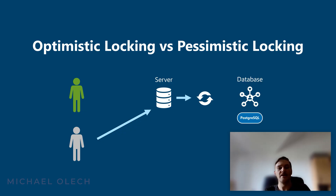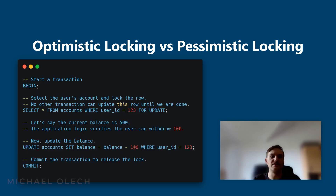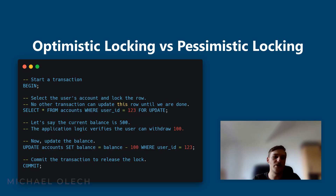Without further ado, let's talk about pessimistic locking. Pessimistic locking operates under the assumption that conflicts between transactions are very likely to occur. Therefore, it locks database records at the moment they are read, preventing any other transactions from modifying or sometimes even reading them until the first transaction is finished, either committed or rolled back. This approach is like saying: I'm probably going to have a conflict, so I will lock this record now to be safe.